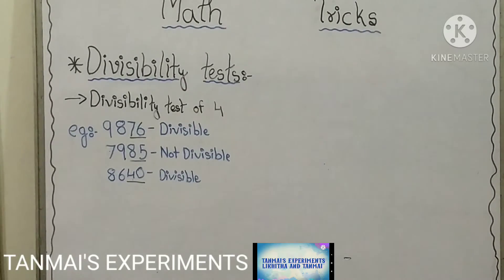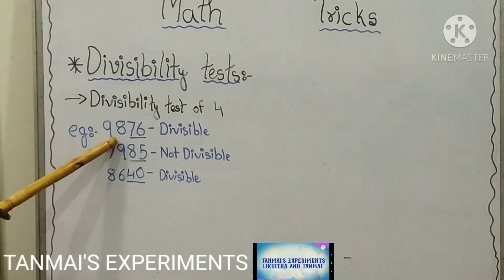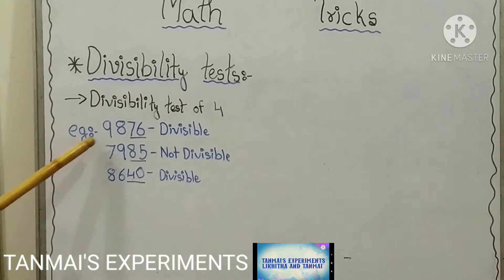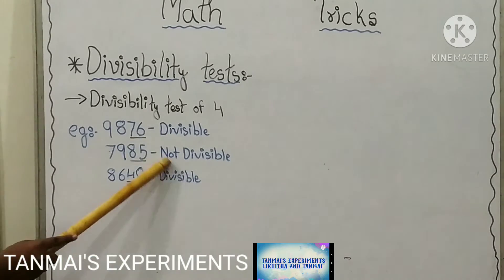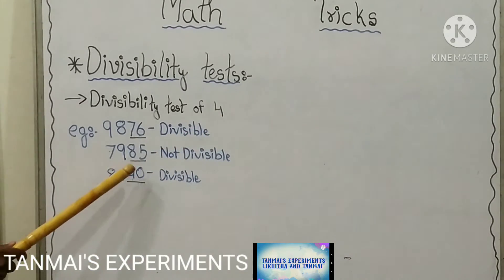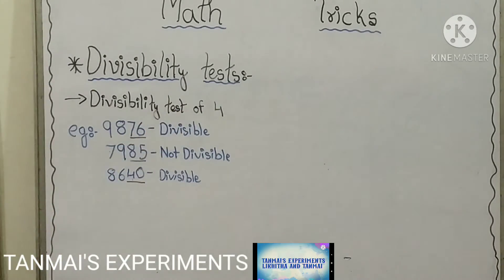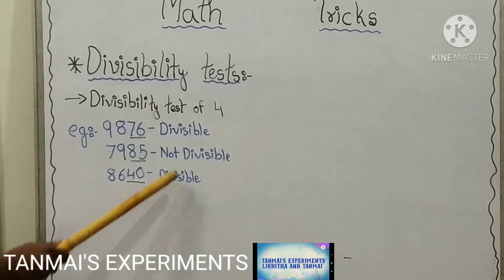The divisibility test of 4 is that in the given number, if the last two digits are divisible by 4, then the entire number will be divisible by 4. In 9,876, the last two digits are 76, and 76 is divisible by 4, hence 9,876 is divisible by 4. In 7,985, the last two digits are 85, which are not divisible by 4, hence 7,985 is not divisible by 4. In 8,640, the last two digits are 40, which is divisible by 4.